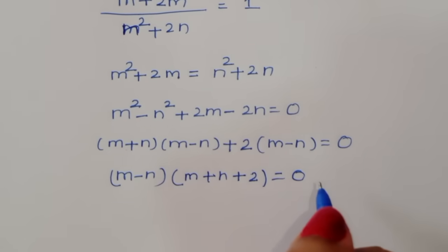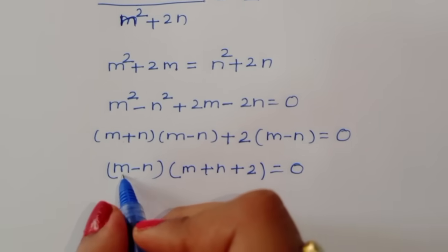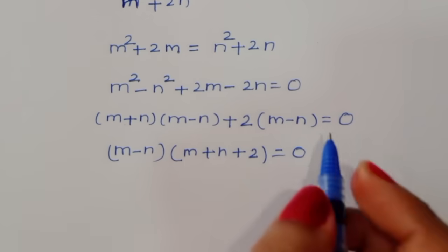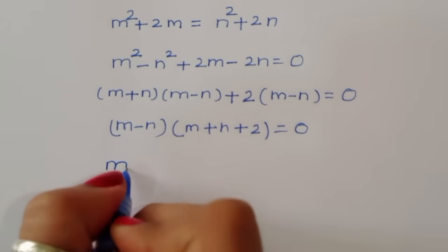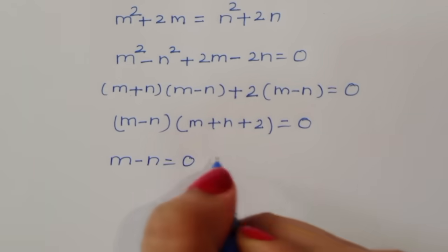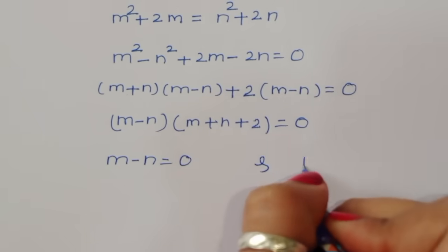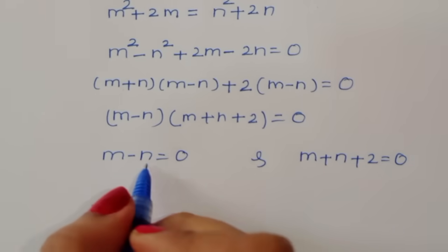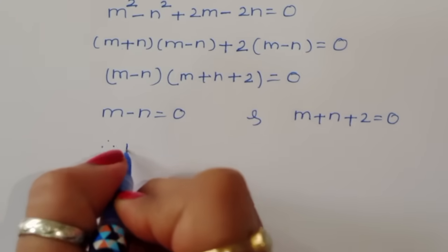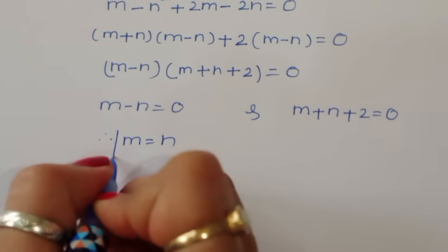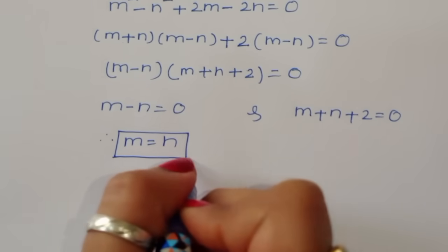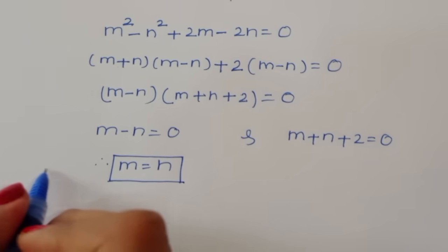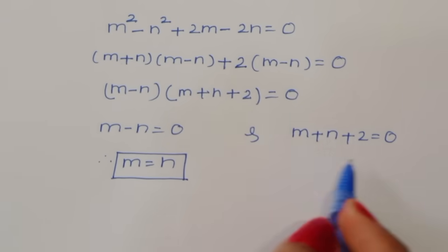We now have two cases: Case 1 is m-n = 0, and Case 2 is m+n+2 = 0. From Case 1, m-n = 0 means m = n. From Case 2, m+n+2 = 0. Let's solve each case separately.